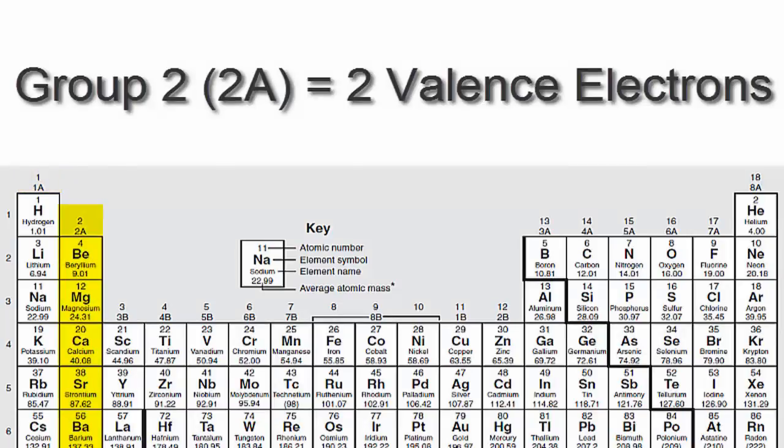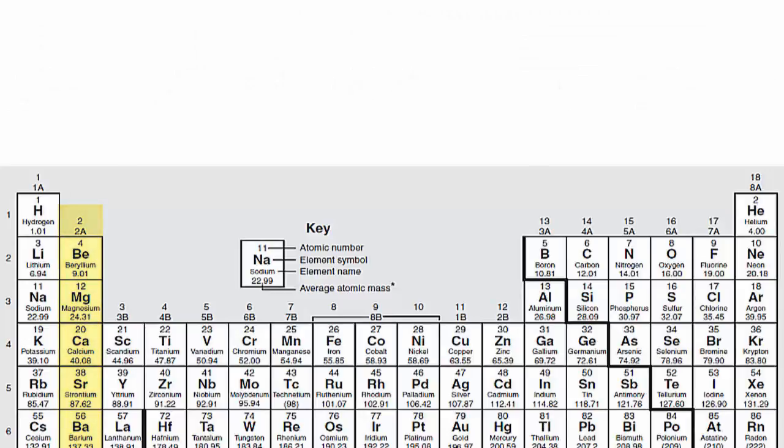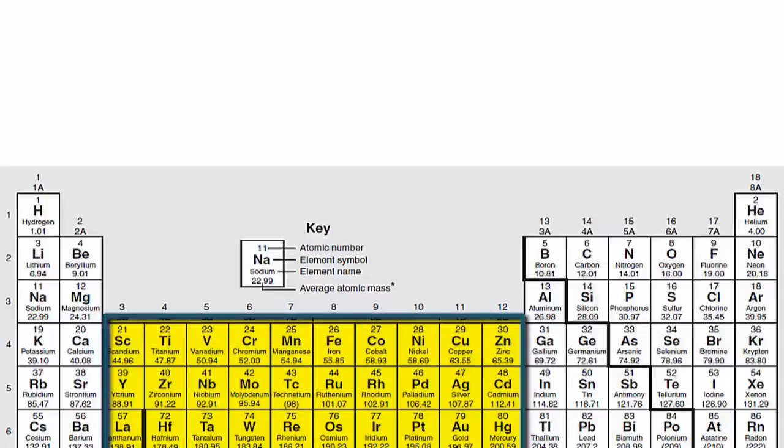If you look at group 2 or 2A, you'll see that those elements have two valence electrons. We'll skip over the transition metals since they're a bit more complicated and probably don't apply to you.